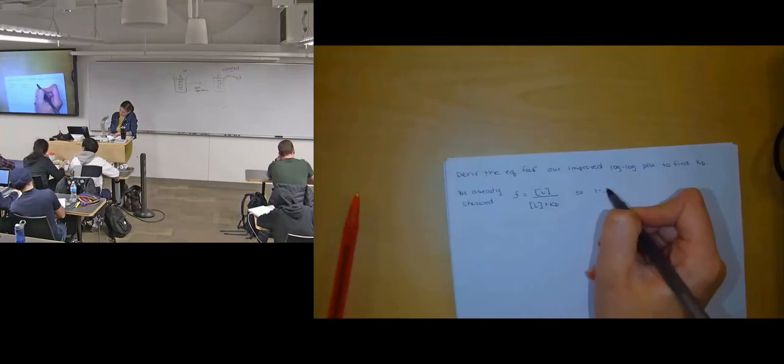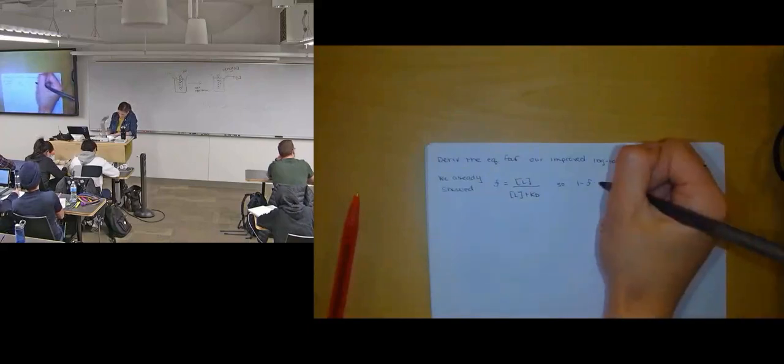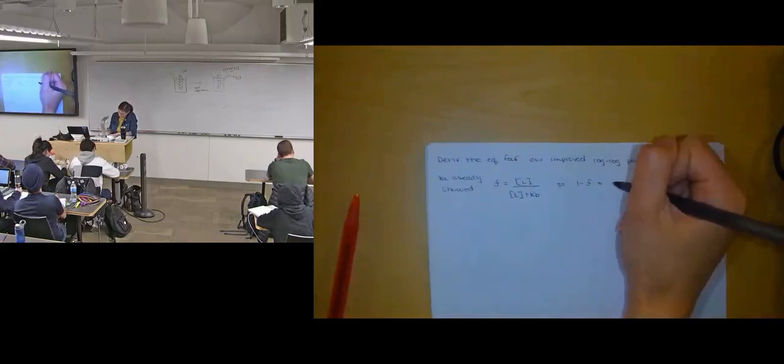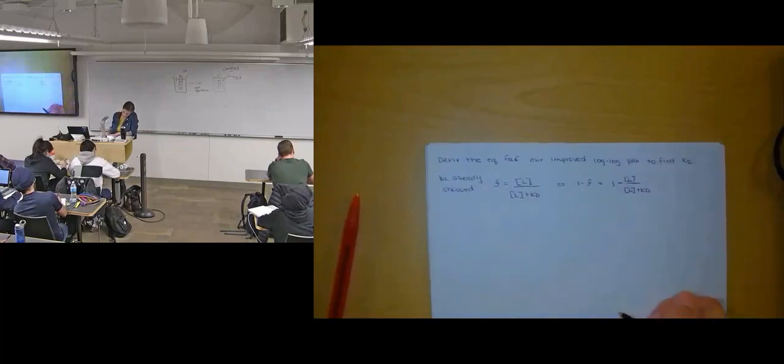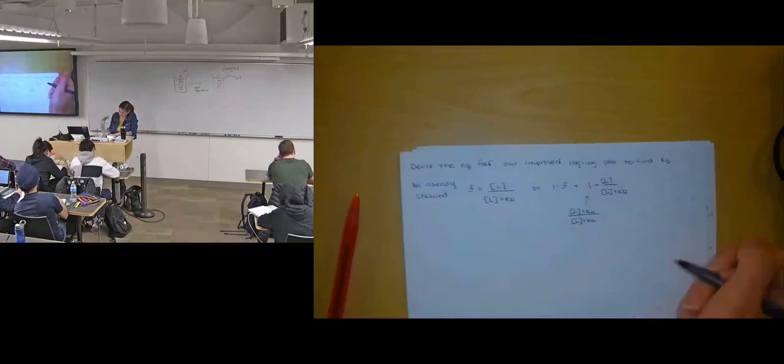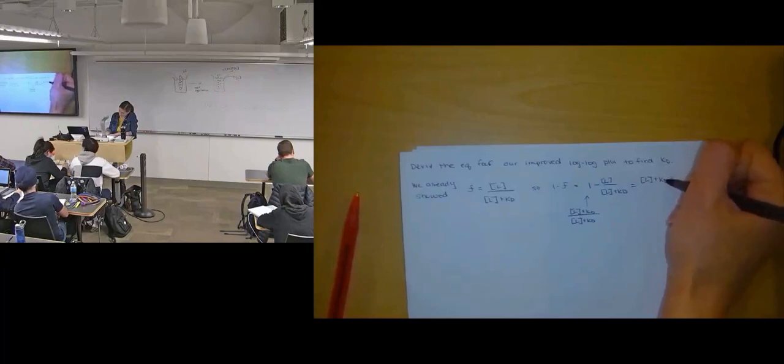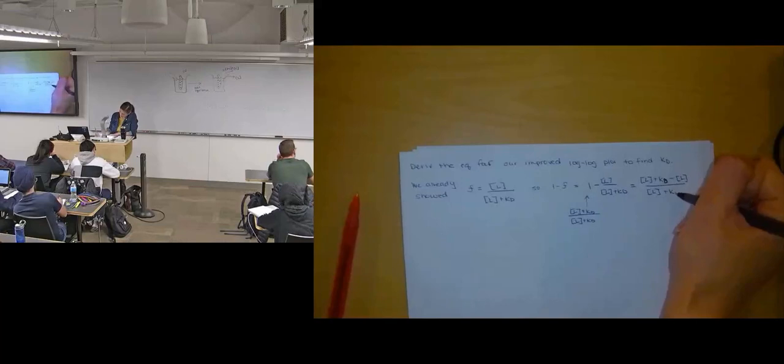So then we can also write a relationship for one minus our fractional saturation. This is going to be equal to 1 minus concentration of L over concentration of L plus Kd. And then I'm going to go ahead and just get a uniform denominator.